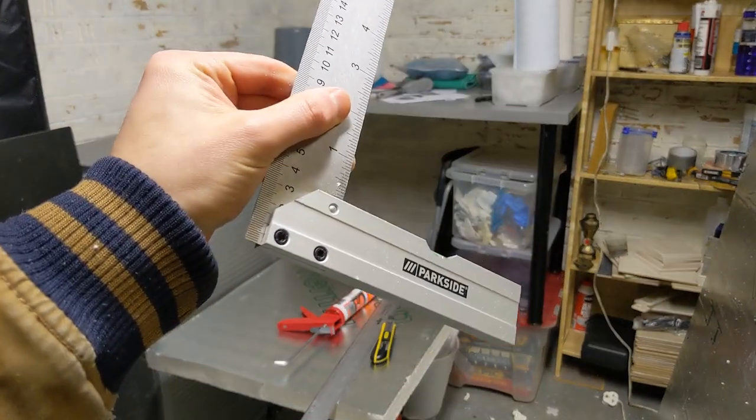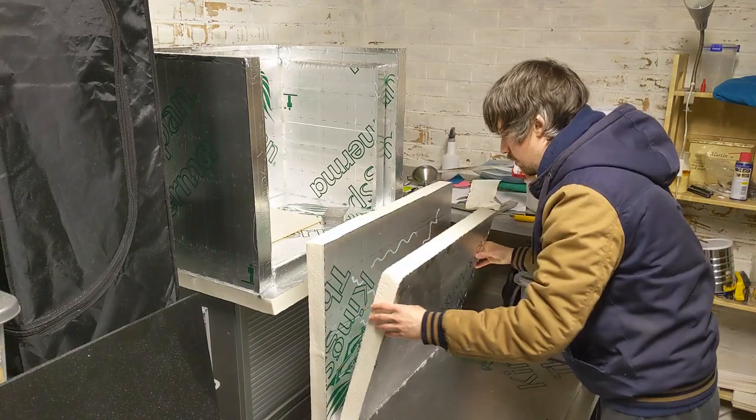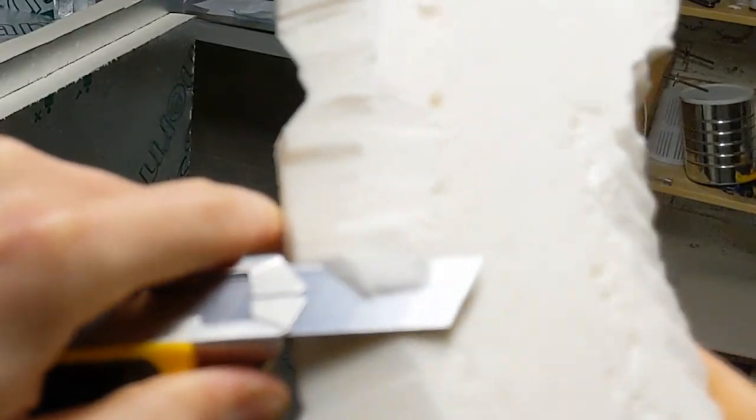To stick everything together, silicon is great for the job. Use a square to make sure things are straight while it dries. I'm using some paint pots and old bits of wood to hold things in place. Once the silicon is dry and you've done a shoddy job like me, there might be some bigger gaps in the seam.